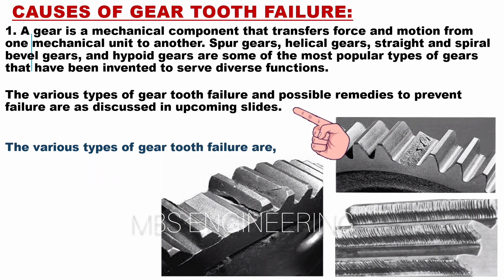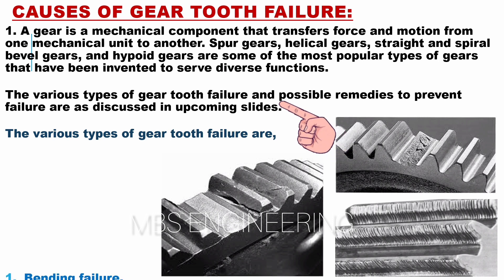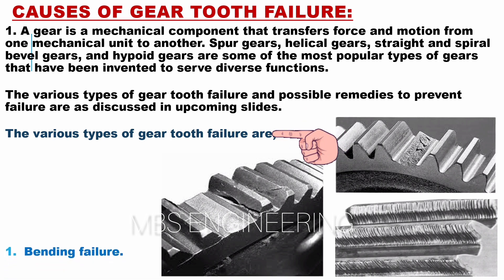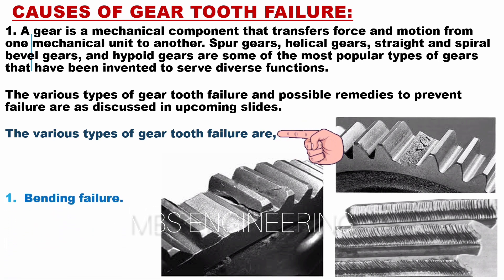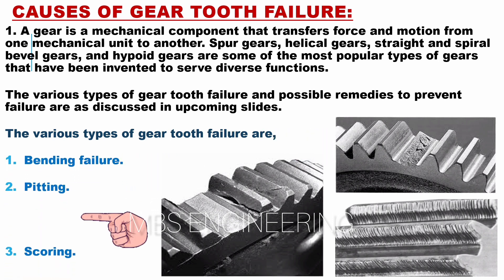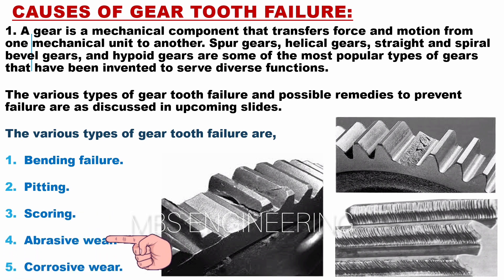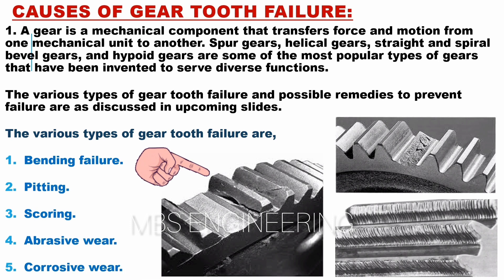The various types of gear tooth failure and possible remedies to prevent failure are discussed in upcoming slides. The five types of gear tooth failure are: first, bending failure; second, pitting; third, scoring; fourth, abrasive wear; and fifth, corrosive wear. Please refer to the images of the gear teeth failure for better understanding.